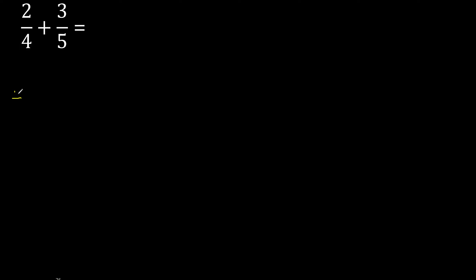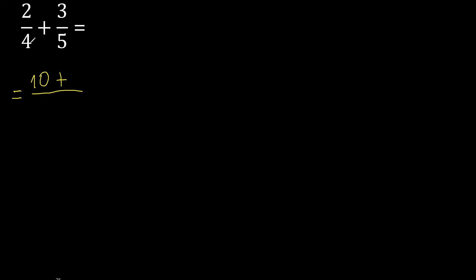First, multiply like this: 5 multiplied by 2 is 10, 4 multiplied by 3 is 12, 4 multiplied by 5 is 20.